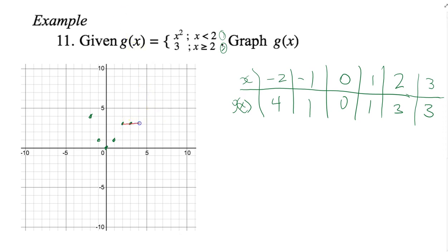From 2 onwards we get a straight horizontal line at y equals 3, and before x equals 2 we have a parabolic curve. Since 2 is not included in the first piece, we check what the first piece would give at x equals 2: x squared gives 4. So we place an open circle at the point (2, 4) and draw the curve up to that point, leaving it open. That is what the graph looks like.